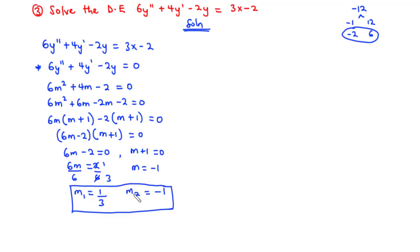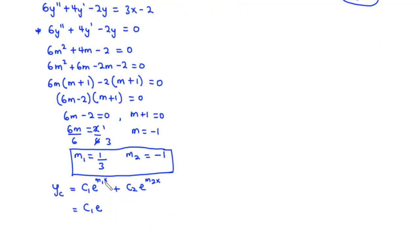Since the two values are distinct — they are different from each other — and they are real values, we have two real and distinct roots. So the general solution of the homogeneous equation, the complementary function, is yc = c₁e^(x/3) + c₂e^(−x).